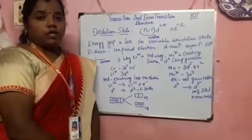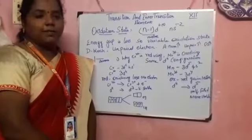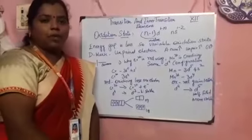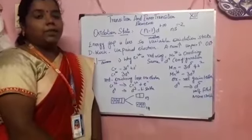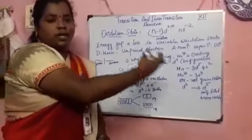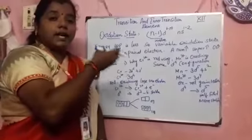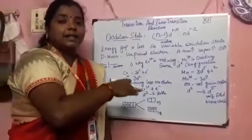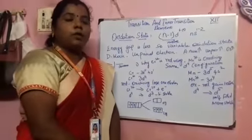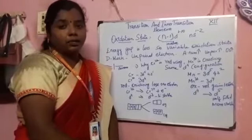In last class, we saw about what is meant by transition and the position of the D-block elements. Transition elements are otherwise called D-block elements. They are positioned in between the S-block and the P-block. They have a greater size than S-block elements and lesser than P-block elements. We also saw about atomic radius along the period as well as the group.